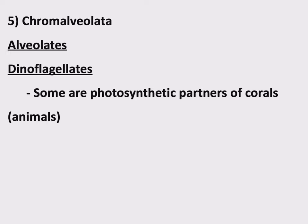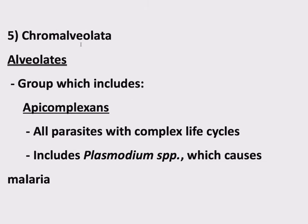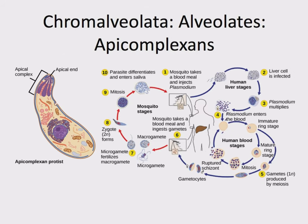That was dinoflagellates. Another group within Chromalveolata, within alveolates, is apicomplexans. You know you're in for a wild ride when the group has 'complex' as part of its name. This includes the parasite that causes malaria. A lot of protists have complex life cycles, and this is a prime example. We are not going to memorize all these steps, but I put up this slide to show you just how complicated things can be — stages in the mosquito, fertilization events, mitosis, and different stages throughout.